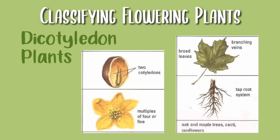Moving on to dicot plants — they have two cotyledons and their petals are usually in multiples of four or five. They have broad leaves with branching veins and a tap root system. Examples of dicot plants are oak and maple trees, cacti and sunflowers.